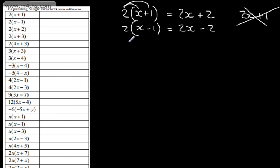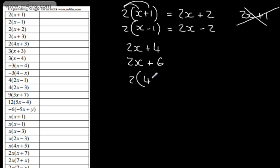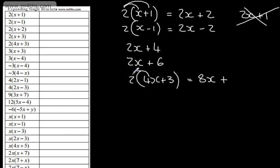Let's look at this one. This is going to be 2x plus 4 — I've done 2 times x, 2 times 2, and added them together. This one again is going to be 2x plus 6. This one here, we've got 2 lots of 4x plus 3. We're going to multiply 2 by 4x: 2 times by 4 is 8, multiplied by x gives me 8x. A common error here is when students write that it's plus 3 — it quite clearly isn't, because we're going to do 2 times by 3, which gives me 6. So it's 8x plus 6.